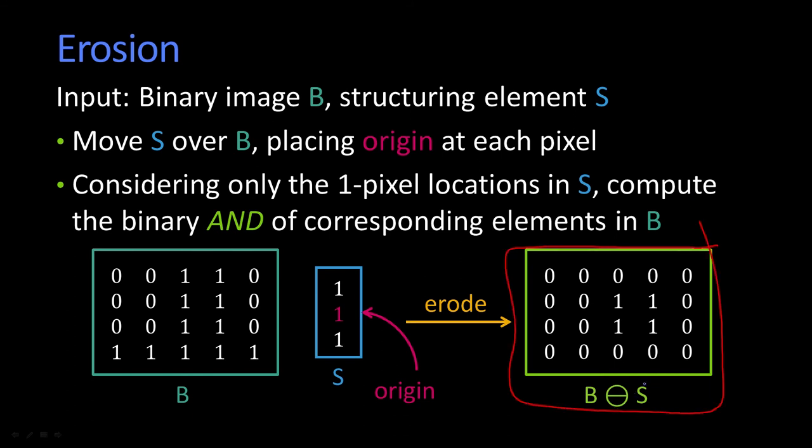And by the way, I guess I didn't mention the other one. This circle with the minus on it, that's referred to as erosion, and the circle with a plus, that's the dilation nomenclature.